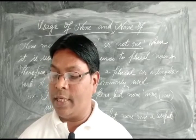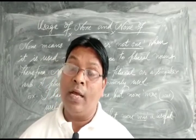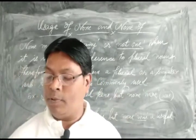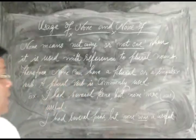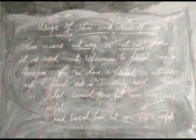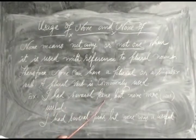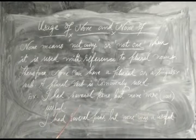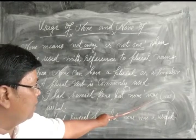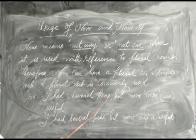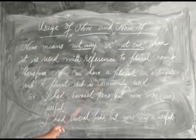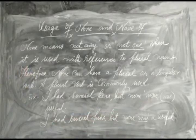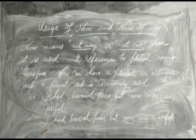'None' means 'not any' or 'not one.' When it is used with reference to plural nouns, the verb can be plural. For example: 'I had several pens but none were useful.' Here, a plural verb is used because 'none' refers to the plural noun 'pens.' So the verb 'were' is plural here.